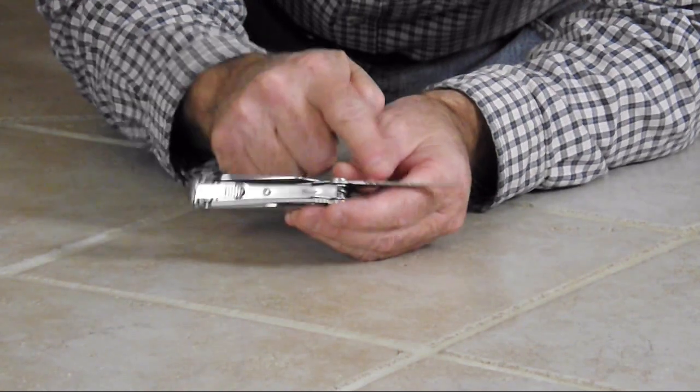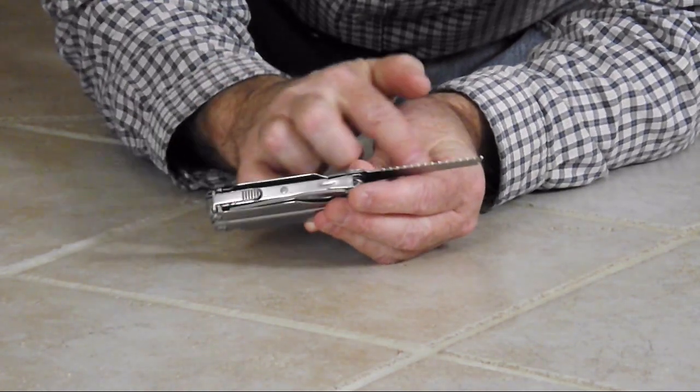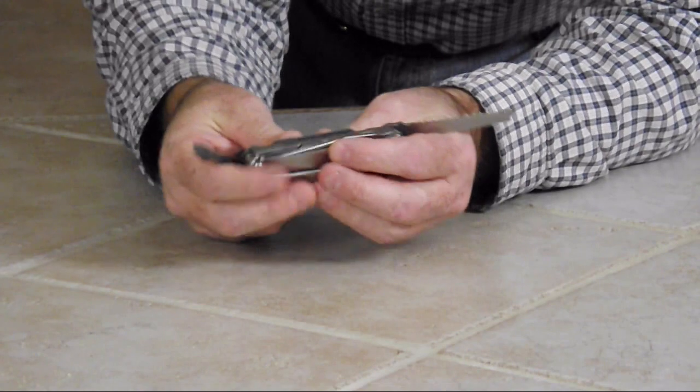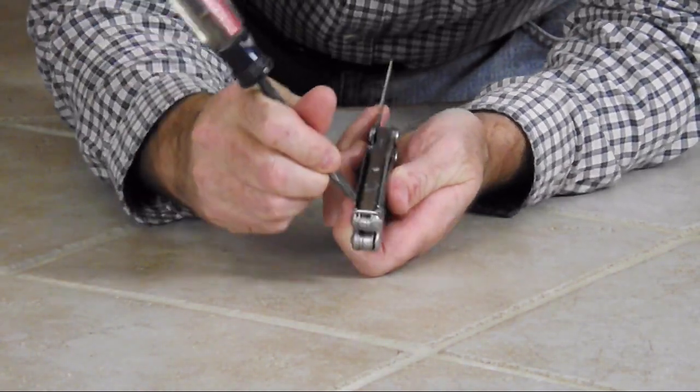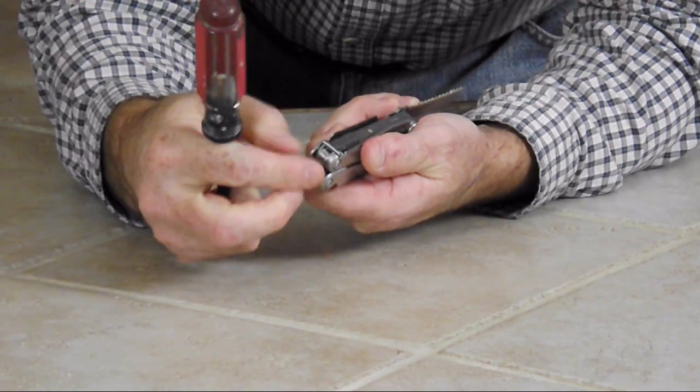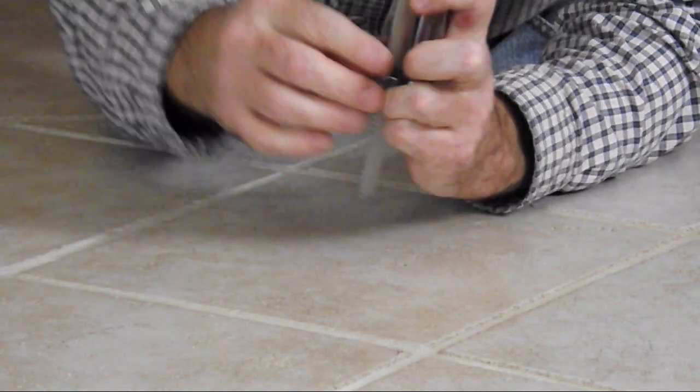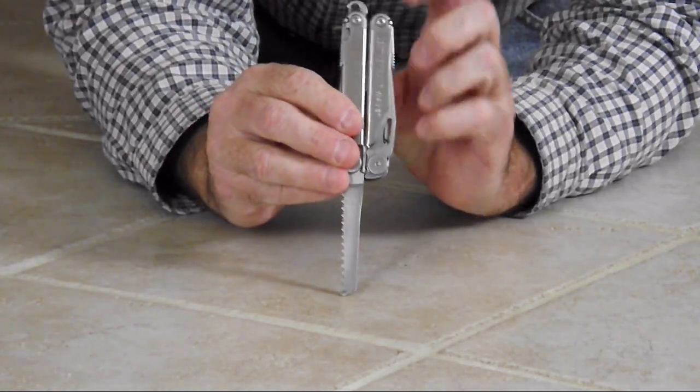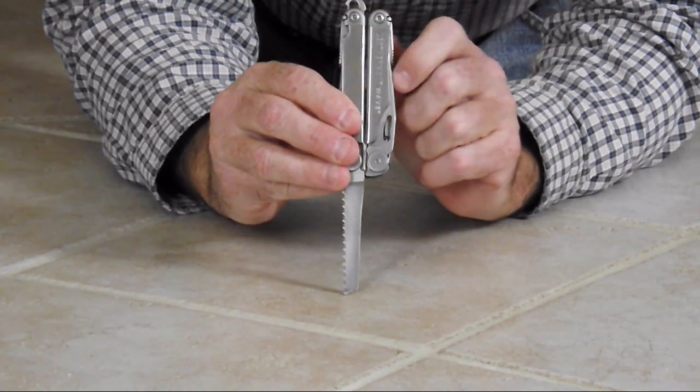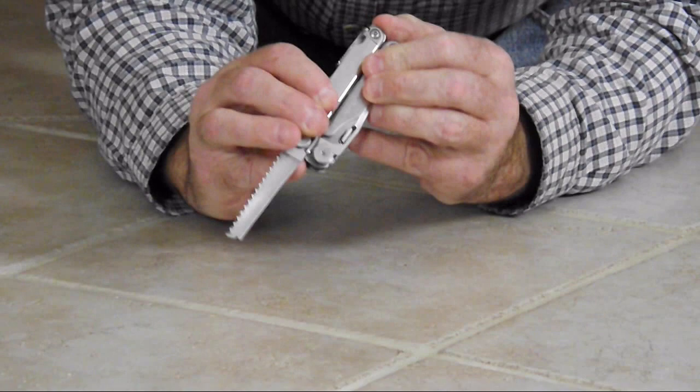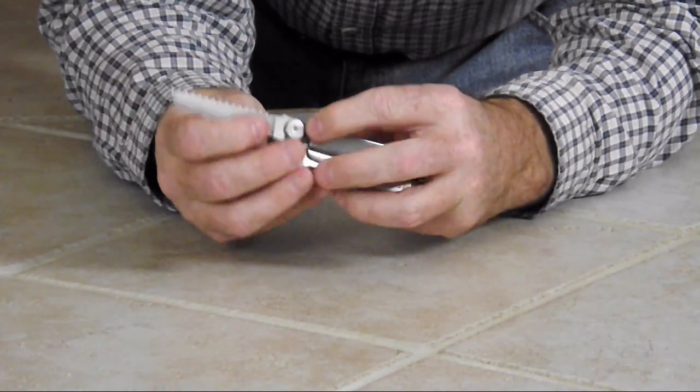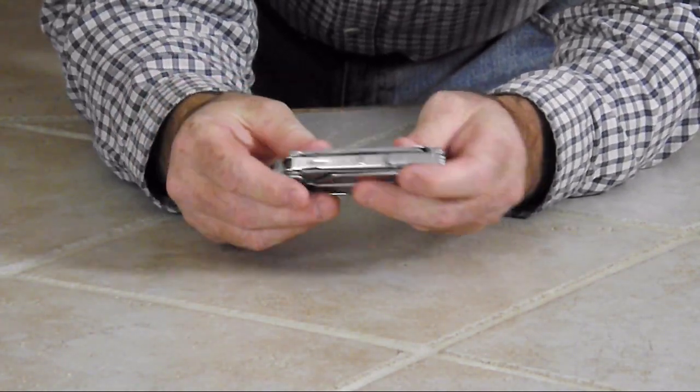Also, in the saw cavity where the saw is stored, if you take a flat-tip screwdriver, you'll notice in the far corner there's a little lump of metal. If you push out on that, it releases a ring for a lanyard where you can put a rope. It's kind of handy. If you don't need it, just tuck it back in.